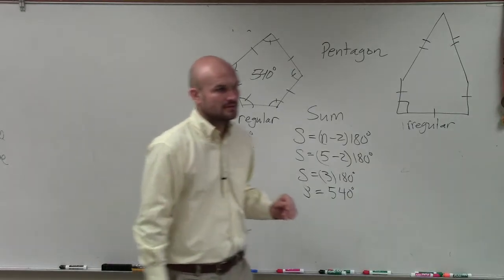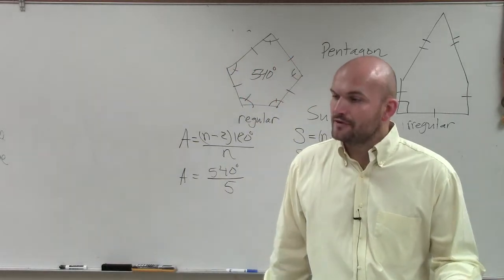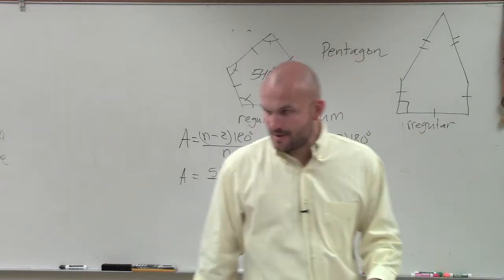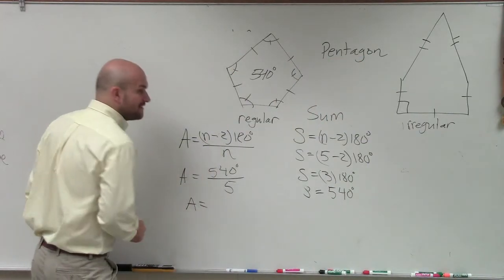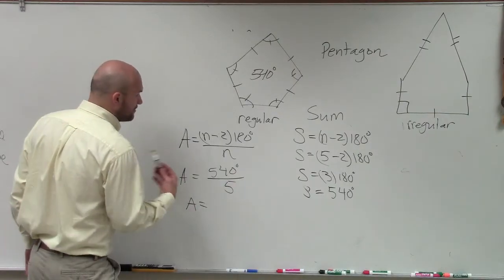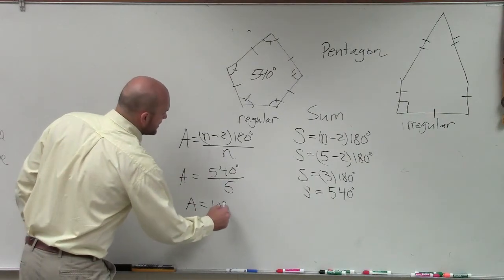So now, if I take 540 divided by 5, I'm going to get the measure of each angle of a regular pentagon is going to be 108 degrees.